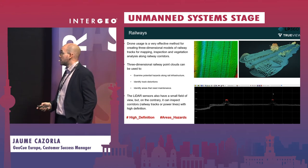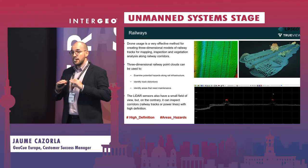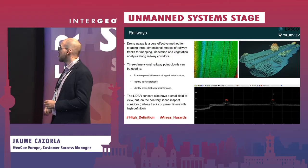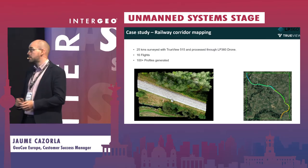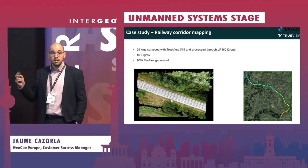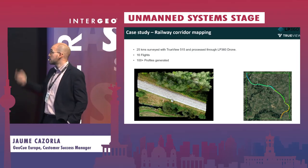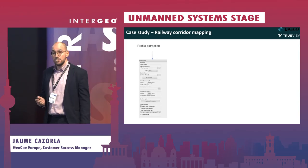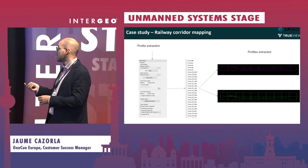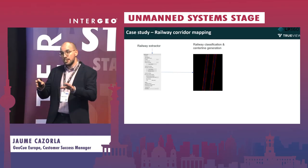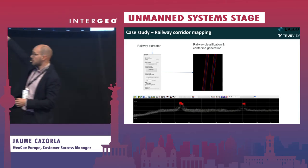The next use case is railway extraction, which is also a very common use. You can use the software to extract the tracks and the center line of the railway. In this case, we had a 25-kilometer railway survey in Denmark with 16 flights. What the user wanted was 100 cross-section profiles of the railway. You can see the project here — we extracted the profiles at a set interval of meters, and later extracted the railway tracks, specifically the top part of the rail and the center line. This is a cross section showing one side of the railway and the other track.